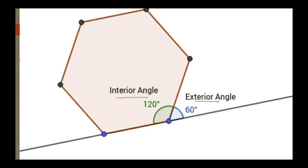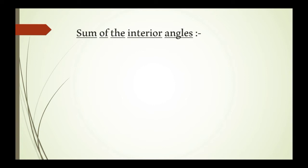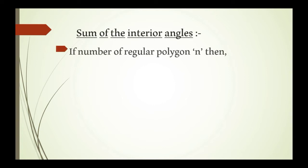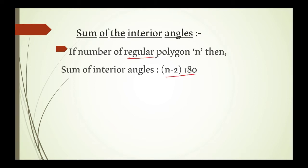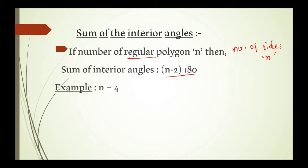We are going to deal with formulas about interior angles and exterior angles. Let us see the first formula: sum of interior angles. If the number of sides of a regular polygon is n, then the sum of interior angles is n minus 2 into 180 degrees.